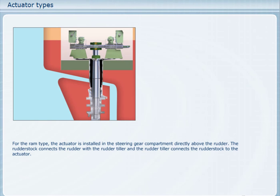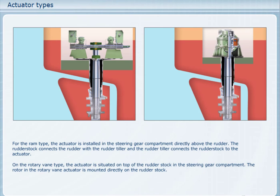For the ram type, the actuator is installed in the steering gear compartment directly above the rudder. The rudder stock connects the rudder with the rudder tiller, and the rudder tiller connects the rudder stock to the actuator. On the rotary vane type, the actuator is situated on top of the rudder stock in the steering gear compartment. The rotor in the rotary vane actuator is mounted directly on the rudder stock.